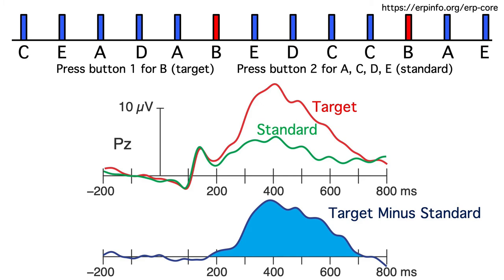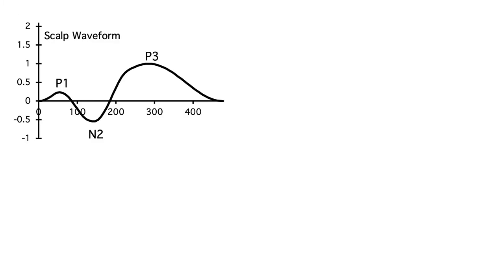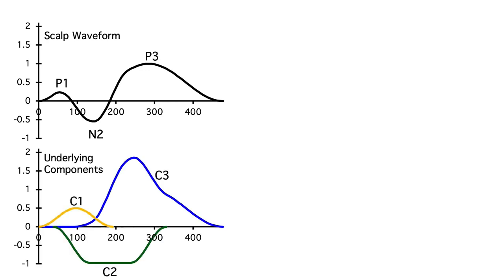OK, let's look at the underlying logic. Imagine that we have a scalp ERP with a P1 wave, a P2 wave, and a P3 wave. And imagine that we knew the source waveforms for the underlying components, which we'll call C1, C2, and C3. The scalp waveform is just the weighted sum of these source waveforms. For simplicity, I'm just using a weight of 1.0 for each component.